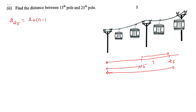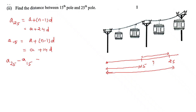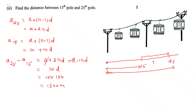A25 = A + 24D, and A15 = A + 14D. The distance between the 15th and 25th poles is A25 − A15 = (A + 24D) − (A + 14D). The A terms cancel, giving 10D = 10 × 150 = 1500 meters. So the distance between the 15th pole and 25th pole is 1500 meters.